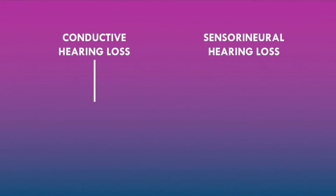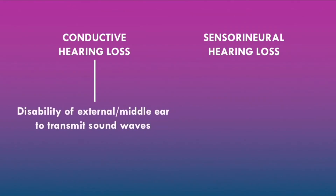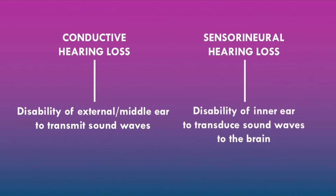Remember there are two different types of hearing loss: conductive hearing loss and sensorineural hearing loss. Conductive hearing loss refers to a disability of the external or middle ear to transmit sound waves, whereas sensorineural hearing loss refers to a disability of the inner ear to transduce sound waves to the brain.